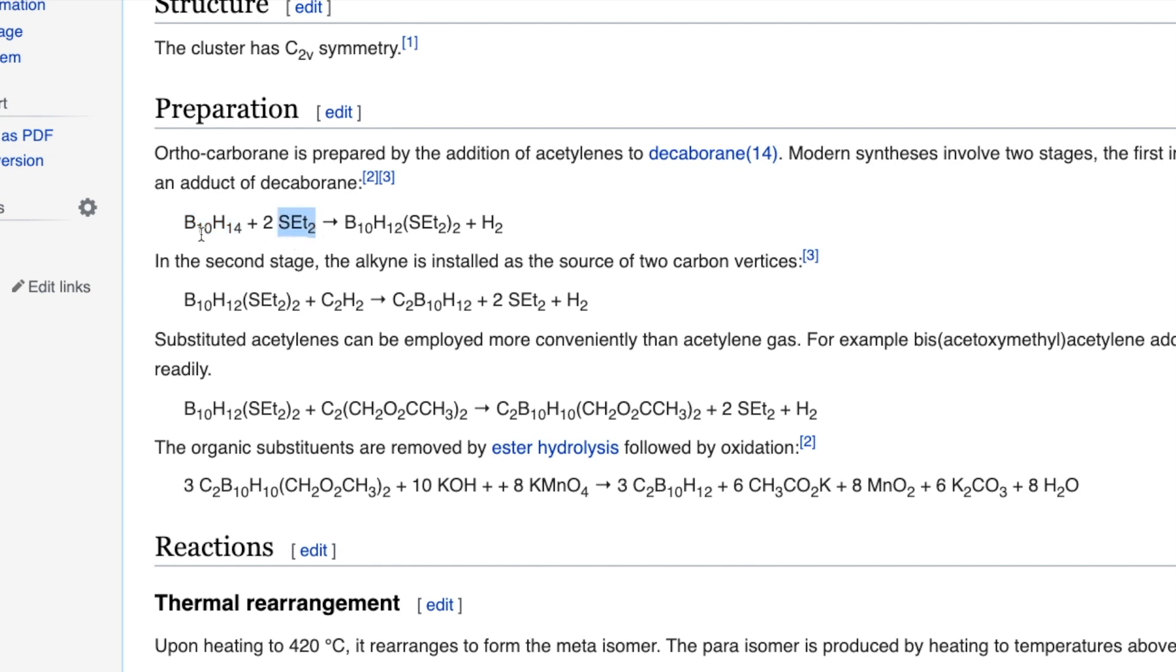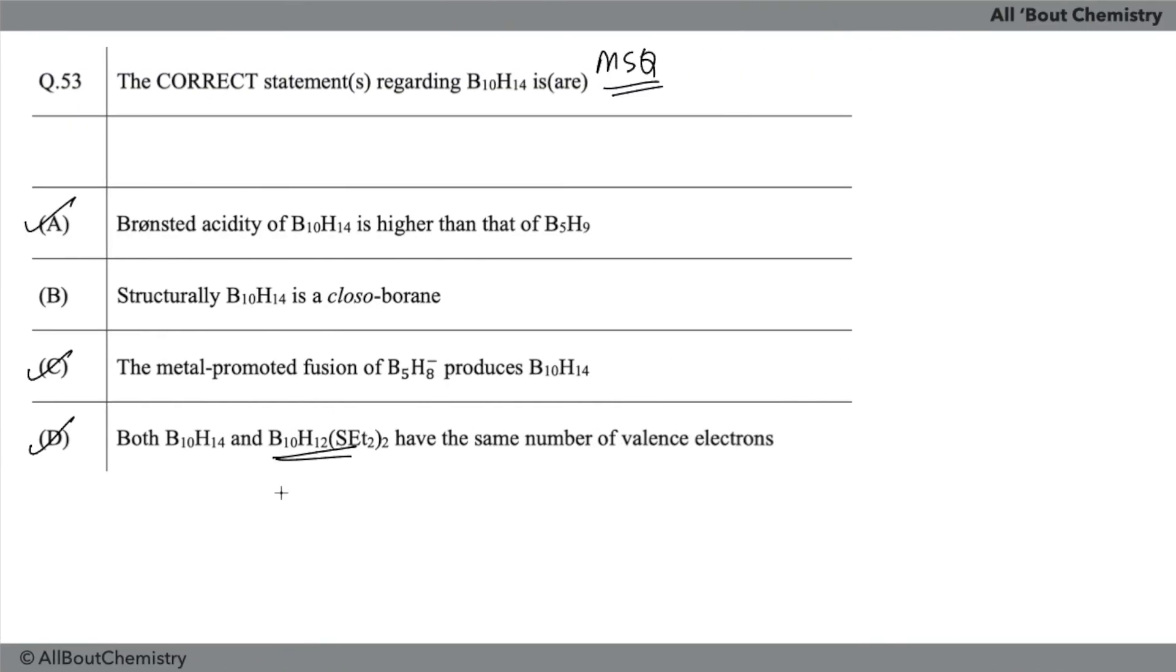B10H12(SEt2)2 will have same number of skeletal electrons as B10H14 because the replacement has been done for two hydrogen with SEt2, and that's why nothing is going to change in the total skeletal electron pair. That's why this also should be correct. If you have some very strong reference for this, you can share that in the email ID provided in the description.